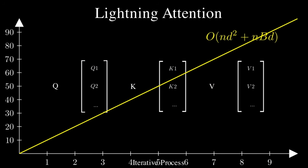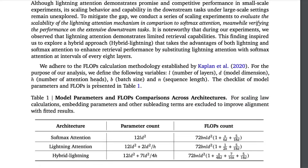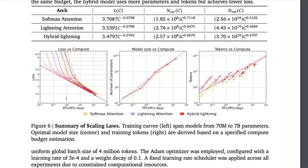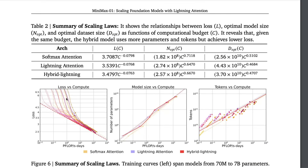This is the fundamental reason why MiniMax-01 has successfully implemented lightning attention. It is better than traditional softmax-based methods, which have very strong compute requirements. You can see the parameter count and FLOP count here, and ultimately it's not just the architecture that makes this model really good.